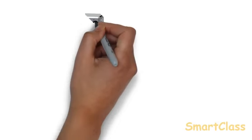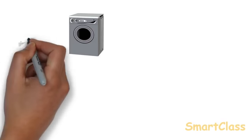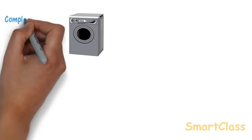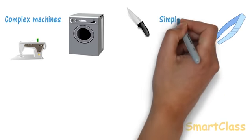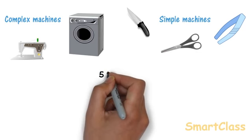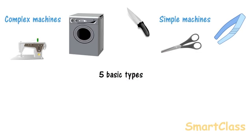Simple machines. Machines like washing machine and sewing machine have many parts and they are called complex machines. Scissors, knives and tweezers have very few parts. They are called simple machines. There are five basic types of simple machines and complex machines are made up of these five simple machines.